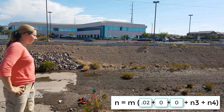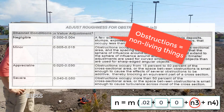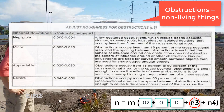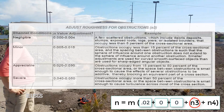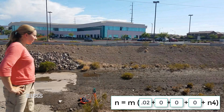Our next variable, n3, is an adjustment for obstructions. I typically think of obstructions as non-living things like debris deposits, piers, or boulders. The values range from 0 to 0.050 for obstructions. This channel has no obstructions, so I will assign a value of 0 for n3.